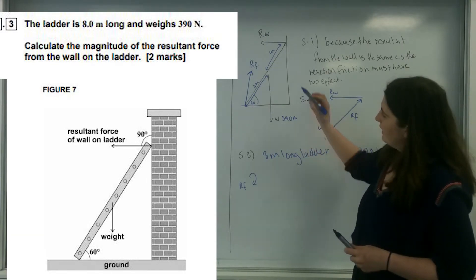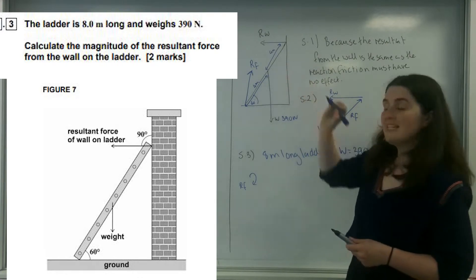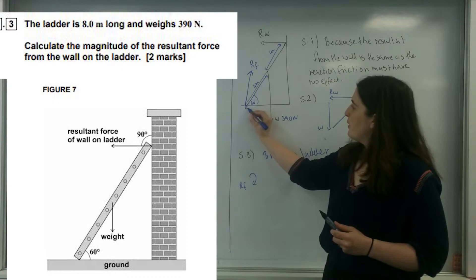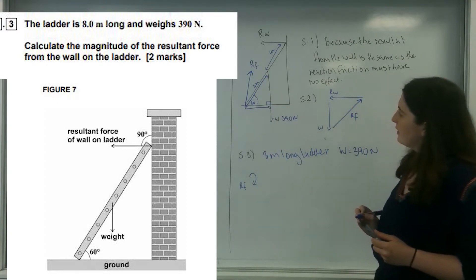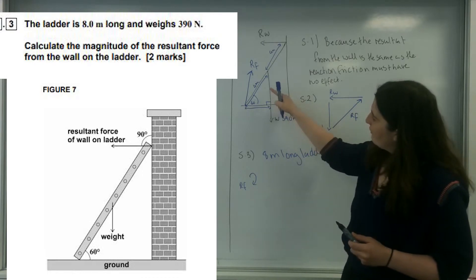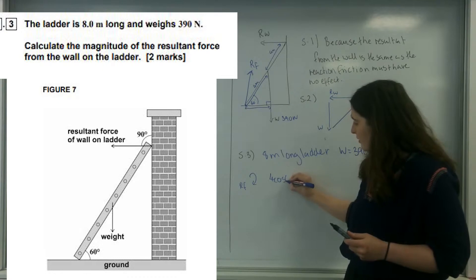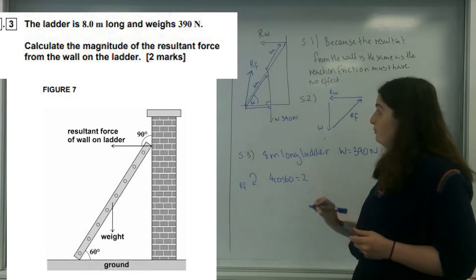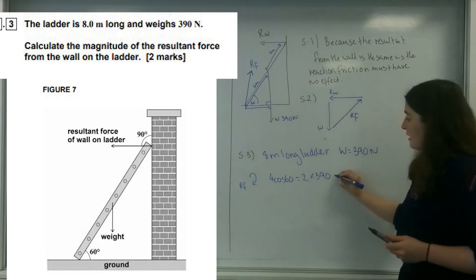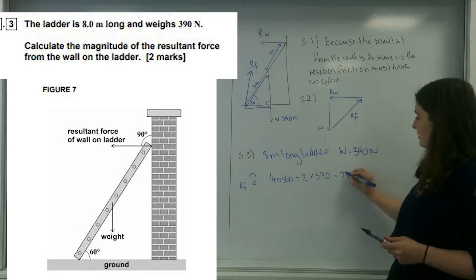If I took this 4 metres, this force is not perpendicular with those 4 metres. This force is perpendicular with this distance here. So I've got a little triangle: I've got 4 cos 60, which equals 2. I'm going to multiply that by my 390, so that is going to be 780 newton-metres.